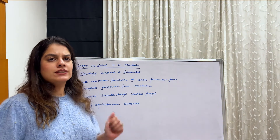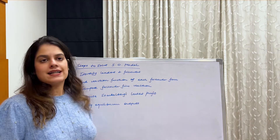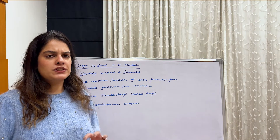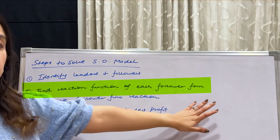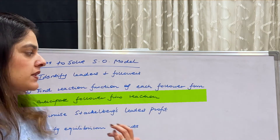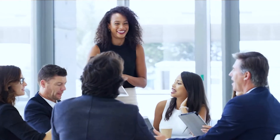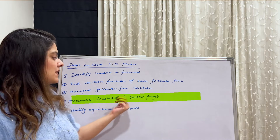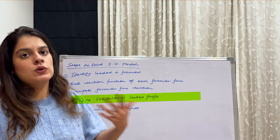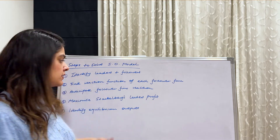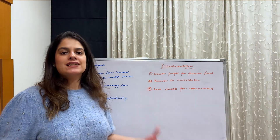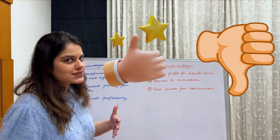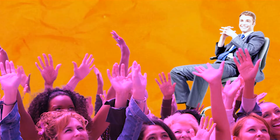Let me quickly run through the steps to solve the Stackelberg oligopoly model. Number one: identify the leaders and followers in the market. Number two: find the reaction function of each of the follower firms. Number three: anticipate the follower firm's reaction — we have to see how they are going to react. Number four: maximize the Stackelberg leader's profits, because the leader always anticipates first and then maximizes his own profits. And lastly: identify the equilibrium output for both the followers and the leader.